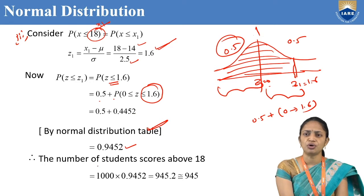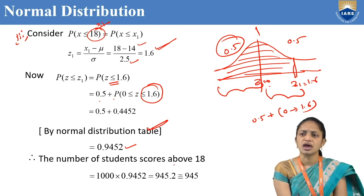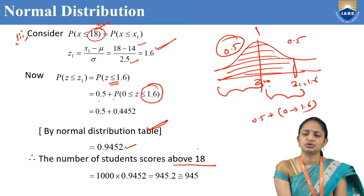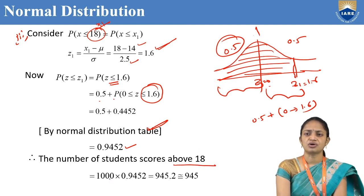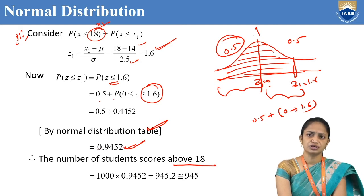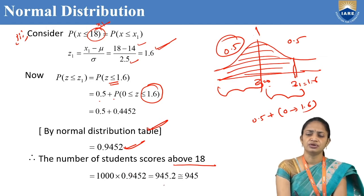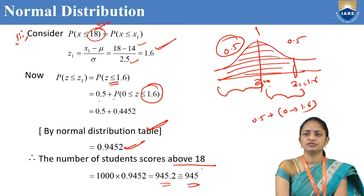Total students are 1000, so the number of students scoring below 18 is 1000 into 0.9452, which equals 945.2, approximately 945 students.